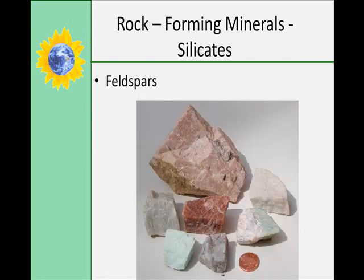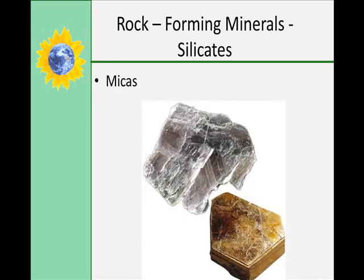Feldspars are another very important rock-forming mineral and are the most abundant mineral on Earth. Feldspars have some aluminum in them, and 60% of the Earth's crust is made of feldspar. Another rock-forming mineral you'll often see is mica — these are soft minerals that flake easily into thin sheets. If you're looking at the surface of a rock and it has little glittery bits, that's mica.